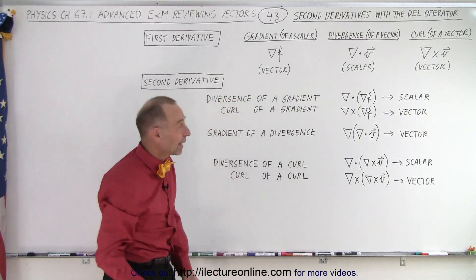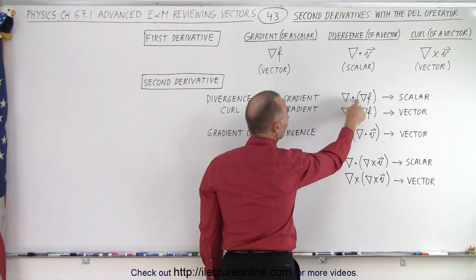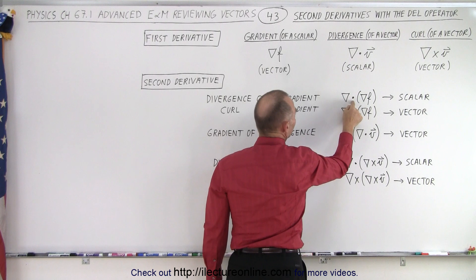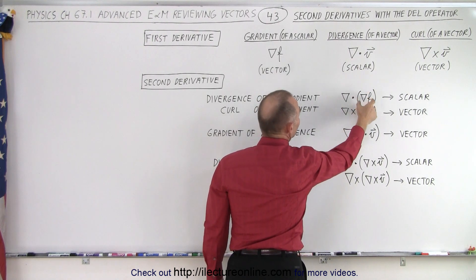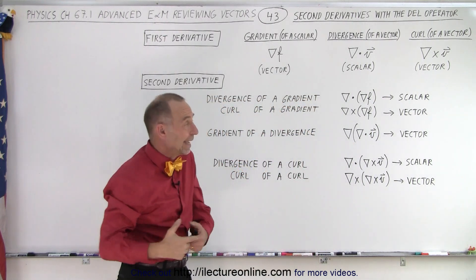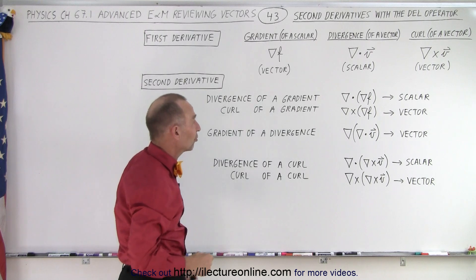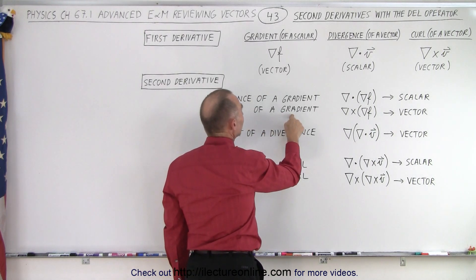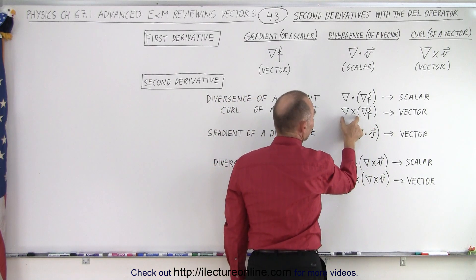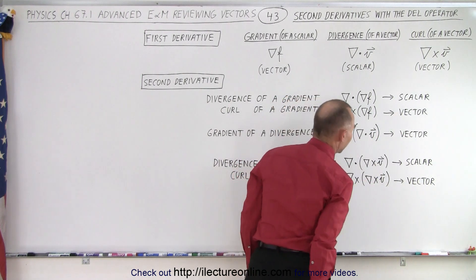Now what does that look like mathematically? Here we're taking the divergence of a gradient. The divergence looks like this with a del operator and a dot product, applied to the gradient — and you will end up with a scalar. Any time you do a divergence, even as a second operation, you end up with a scalar. You can also take the curl of a gradient, because the gradient gives you a vector, and you write it like this — the del operator with the cross symbol on the gradient — and you end up with a vector.